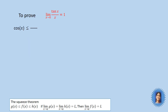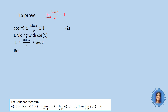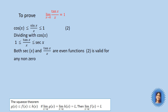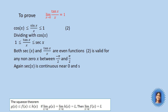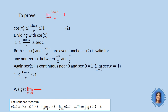Revisiting cos(x) ≤ sin(x)/x ≤ 1, we now divide throughout by cos(x) to get: 1 ≤ tan(x)/x ≤ sec(x). Both sec(x) and tan(x)/x are even functions, and this is valid for any non-zero x in (-π/2, π/2). Since sec(x) is continuous near 0 and sec(0) = 1, the limit as x→0 of sec(x) is 1. So tan(x)/x is squeezed between 1 and 1, and therefore limit as x→0 of tan(x)/x is also equal to 1.